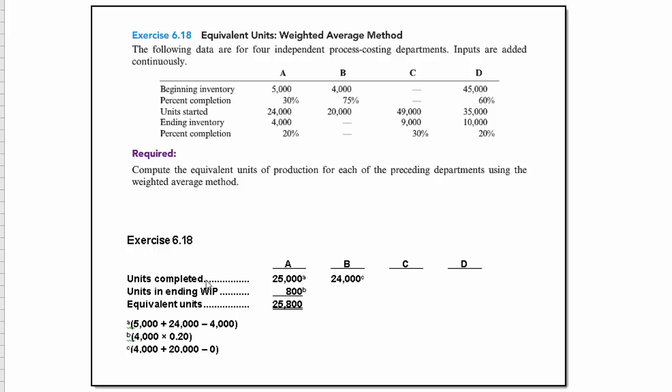How do we come up with units completed? We take what was in beginning inventory, 5,000 units, which is provided here. We add in what was started, 24,000, minus what was in ending.